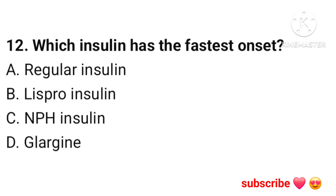Which insulin has the fastest onset? Correct option is B.